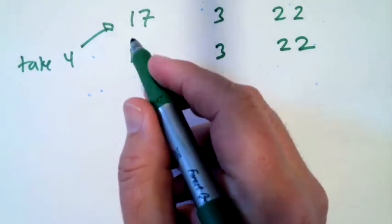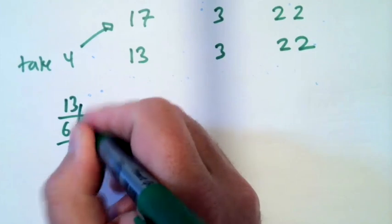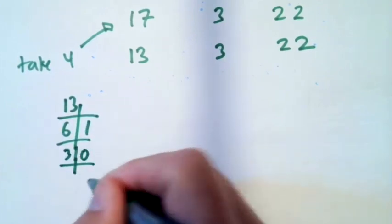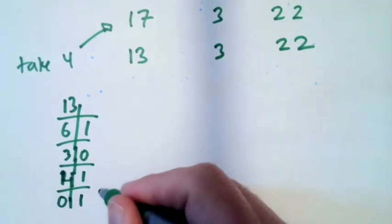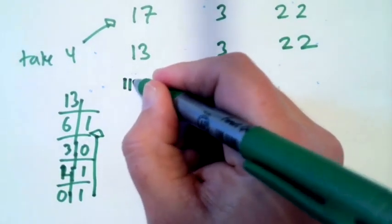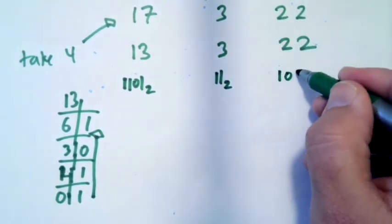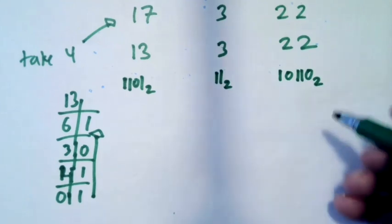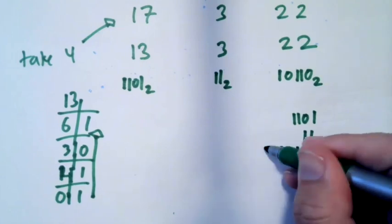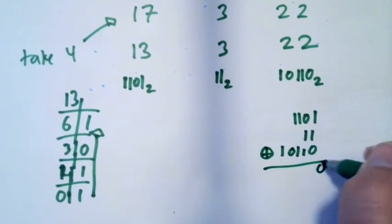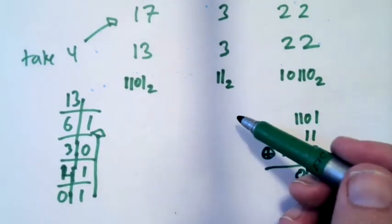If I look at 13 and do the algorithm, 13 divided by 2 is 6, 2 times 6 plus 1. Then 6 divided by 2 is 3 with a remainder of 0. 3 divided by 2 is 1 with a remainder of 1. 1 divided by 2 is 0 with a remainder of 1. So this is 1101 base 2. 3 is still 11 base 2, and 22 is still 10110 base 2. Now if I XOR these three together, I get 0, 0, 0. Uh-oh. Did I do something wrong here? Apparently I can't do it that way because it didn't work.